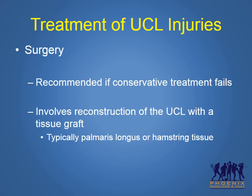If conservative treatment is unsuccessful and athletes are not able to successfully return to throwing activities, surgery is recommended. Repairing the ulnar collateral ligament is typically not successful, so reconstructing the ligament using a graft is recommended for most patients. The graft is typically taken from the palmaris longus tendon on the patient's forearm, but if this tissue is absent or deficient, a hamstring tendon from the knee may also be used.